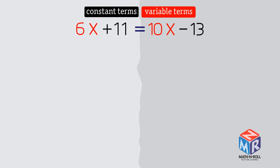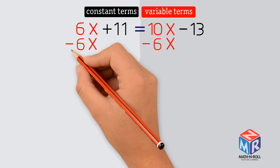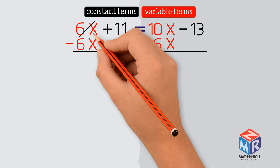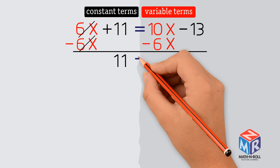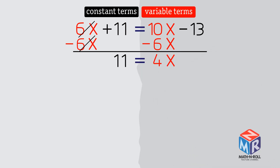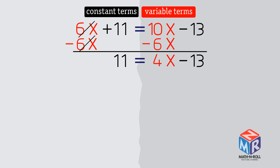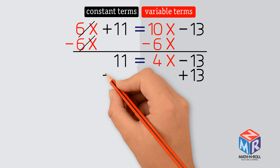We need to get 6x off of the left side because this side is for constant terms. Don't forget to subtract 6x from the right side to keep the balance. We have a constant, negative 13, on the variable side. So we add 13 on both sides to get rid of it.